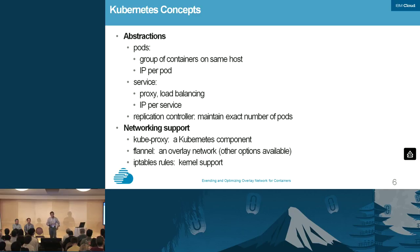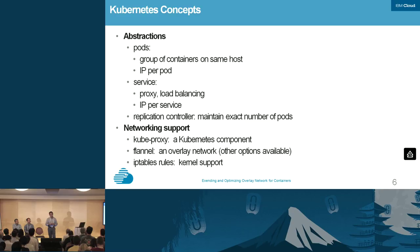To support this kind of networking structure, Kubernetes uses three components. The first is the kubeproxy — a Kubernetes component that runs on every node. The second is Flannel; there are several options for providing networking in a Kubernetes cluster, but Flannel is a common choice — it's an overlay network. The third thing Kubernetes manages is a set of IP table rules that run in the kernel. We'll take a closer look at these components.